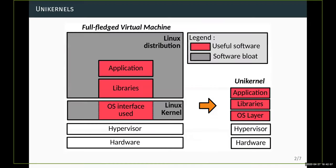In a lot of situations in the cloud, you will run a virtual machine just for executing a single operation. This is very suboptimal because there is a lot of software in the Linux distribution that you are running — a lot of software that is not needed. You're probably making use of only a small subset of this very big monolithic Linux kernel. So there is a lot of software bloat.